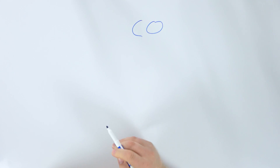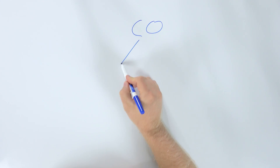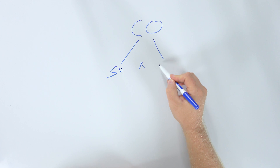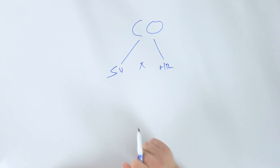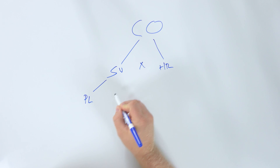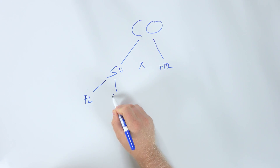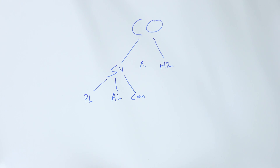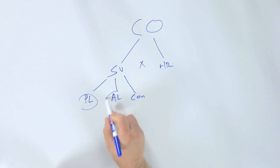Before we get started, we want to talk about cardiac output. Cardiac output is a measurement of stroke volume times heart rate. Those two things impact our cardiac output, so we need to know what impacts stroke volume. First, it's impacted by preload, also by afterload, and then by contractility. Now that we understand where preload and afterload come into play, let's dive in a bit more.